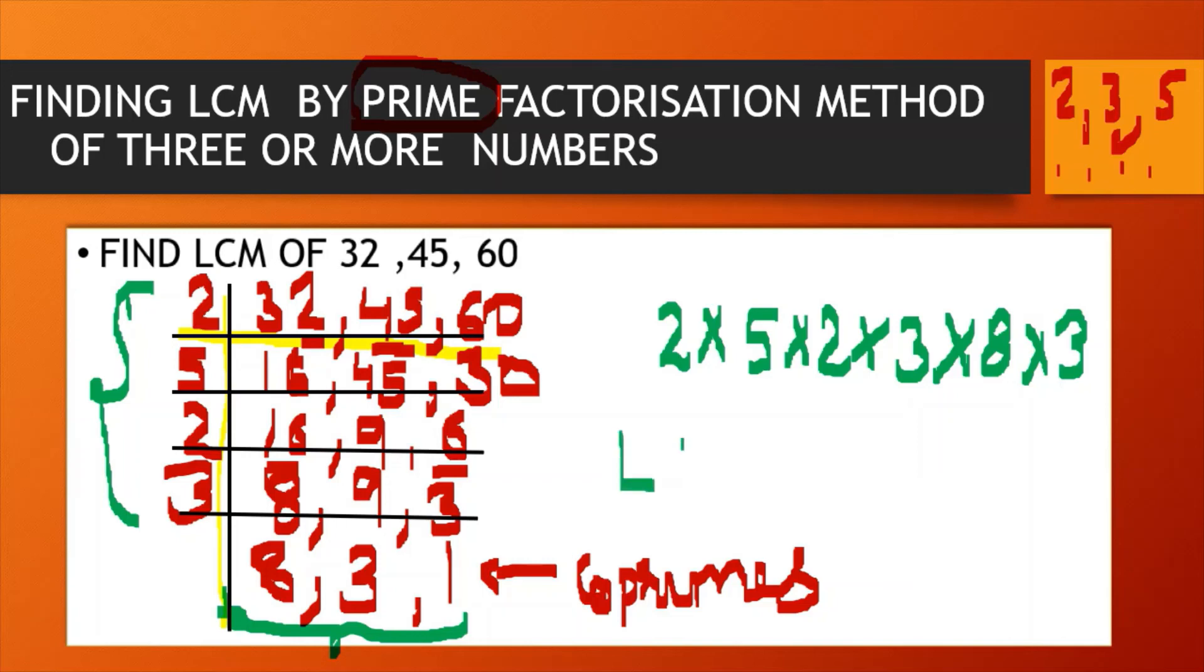And when you find the product of these, that will be your least common multiple of 32, 45 and 60. And I am giving you some time to quickly calculate and give me the answer. So I am waiting. If your answer is 1440, that's the correct answer. Let me just tell you what does this mean. When you table, say the table of 32 and then 45 and 60. So you will go on saying the table of 32 and the first number that you will get common in all these 3 tables will be 1440.